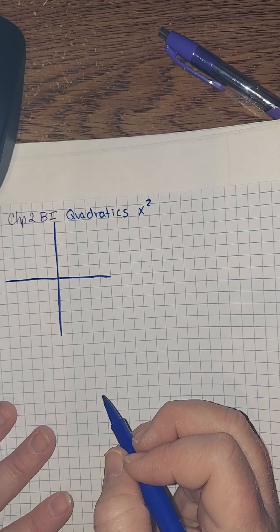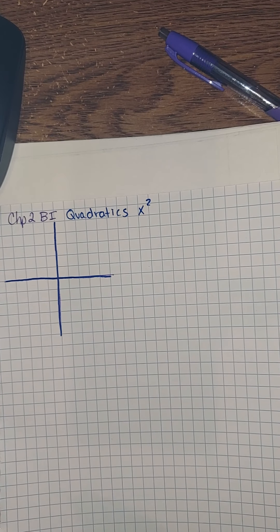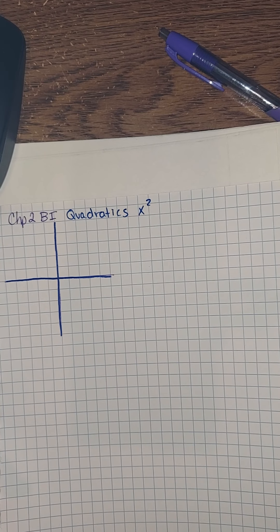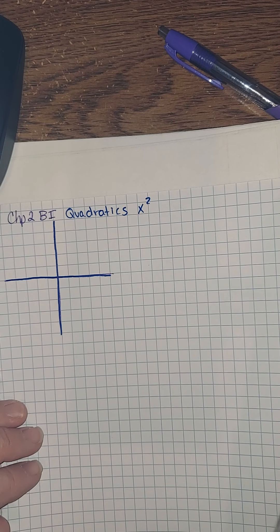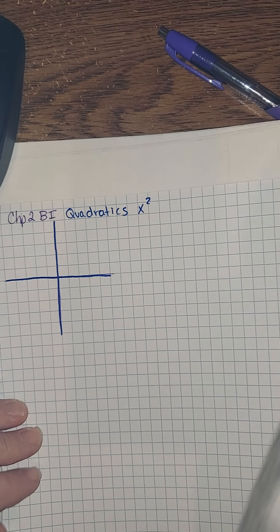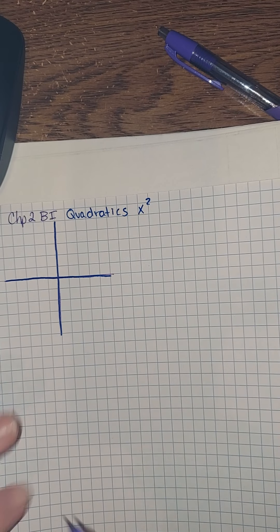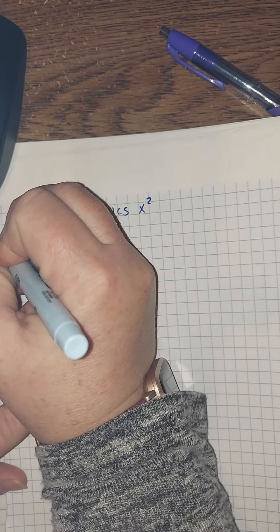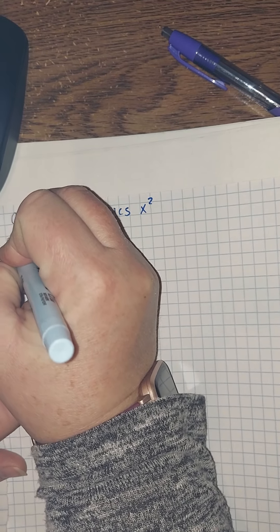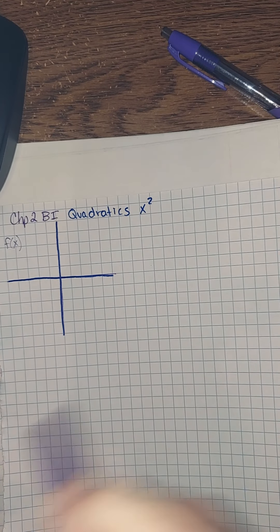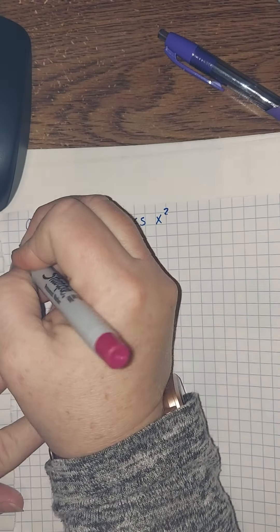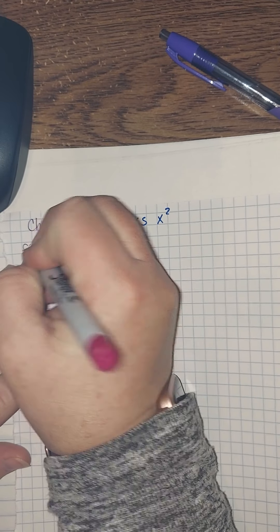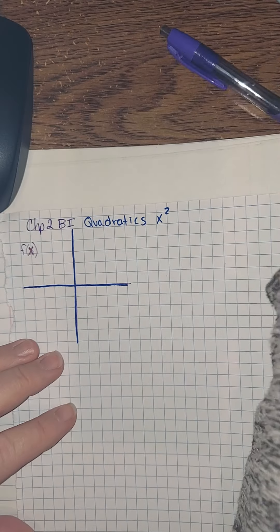So our big thing at the beginning is always to talk about what does the parent function look like for a parabola. We need to start with: what does our parent function look like? Let me try to get a better marker here.